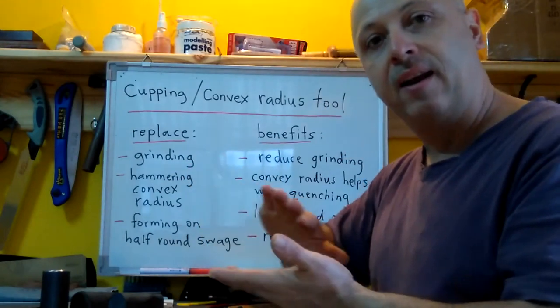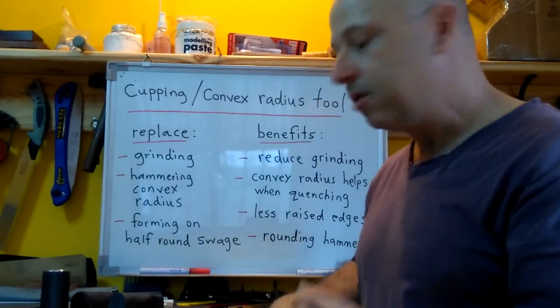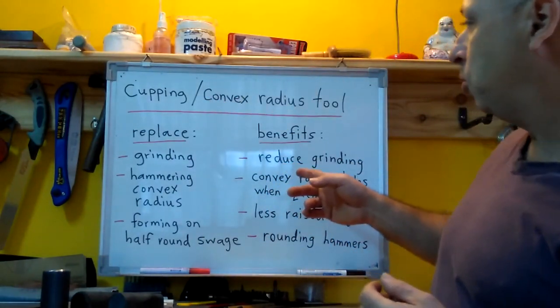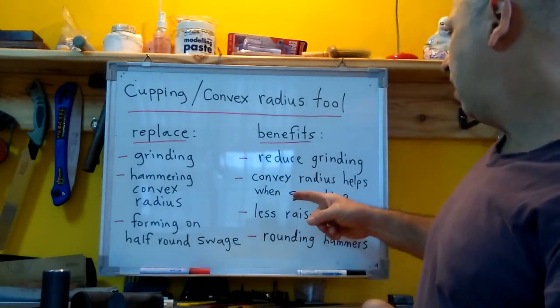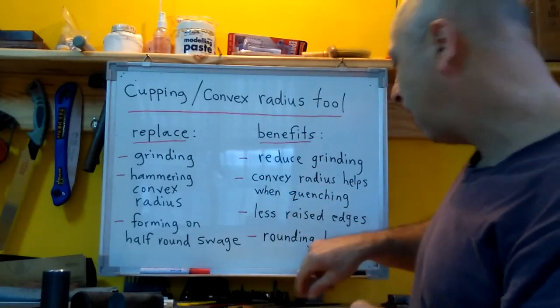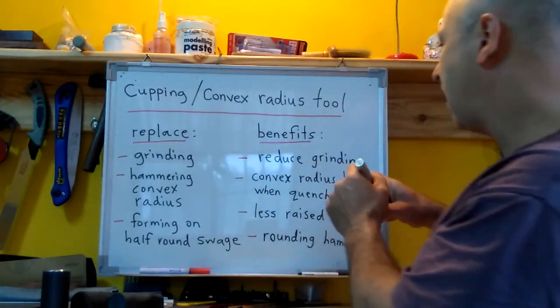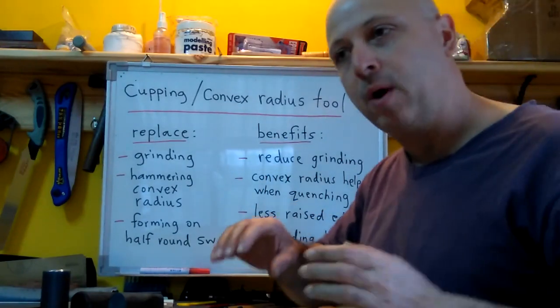That also helps get me started on getting a nice convex surface but it's not good enough. So the benefits of this kind of a tool, a cupping tool, would be obviously reduce the grinding and then the convex radius helps when quenching.